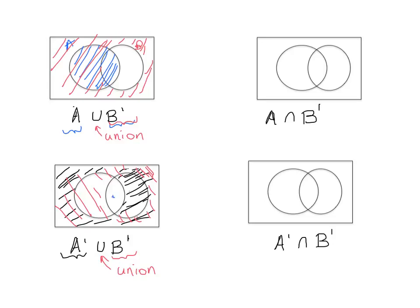With union, it's kind of easy if you think of it as step-by-step instructions: first shade everything in the first set, then shade everything in the next set. Intersections, though, are a little bit trickier. If you see an intersection and can't immediately visualize what the two sets have in common or share, you might want to do some scrap work.